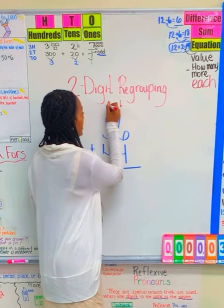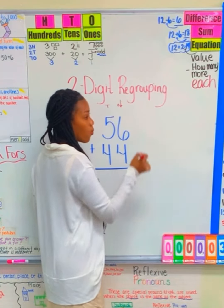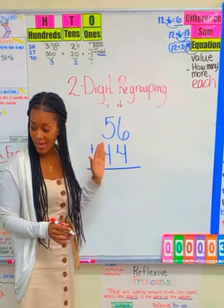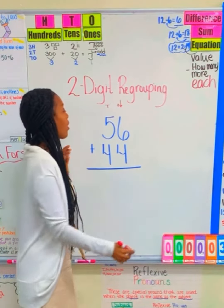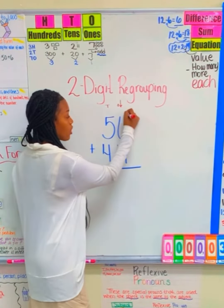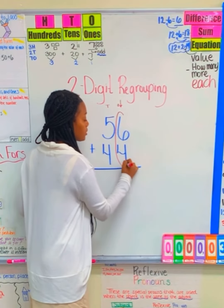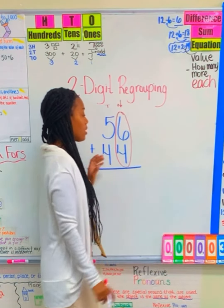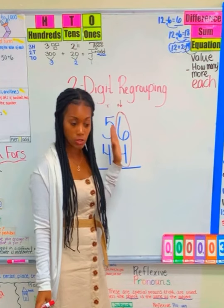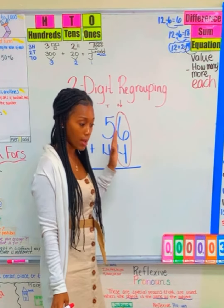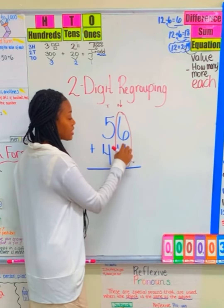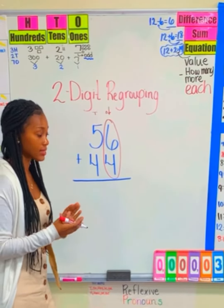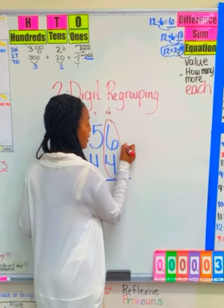This is the tens place, this is the ones place. Anytime that we are adding and we are regrouping, we are always going to start with the ones place. The first thing I'm going to do in this problem is add 6 plus 4. I add the 4 and the 6, it's going to come out to a 10.